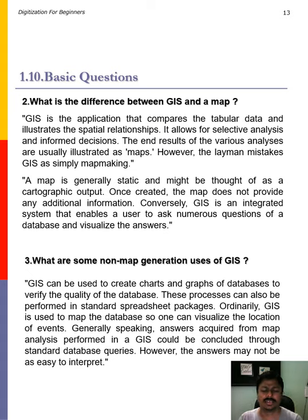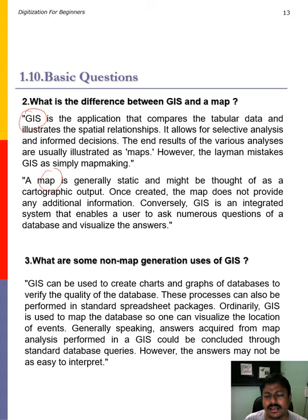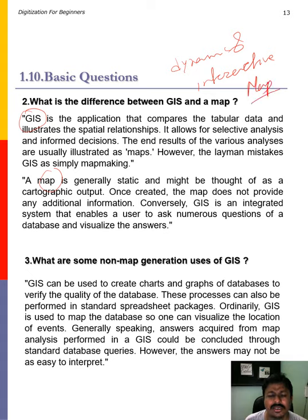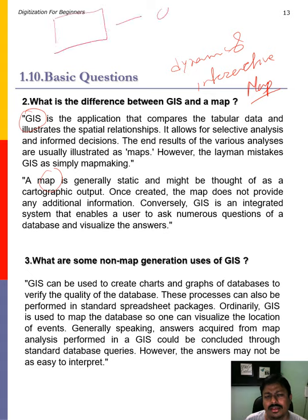What is the difference between GIS and a map? GIS is an information system — a dynamic system. You can change, edit, update, or delete information in a GIS system. So it can be called a dynamic and interactive map. Whereas a map is a static geospatial representation of features — it cannot be changed, edited, updated, or deleted.